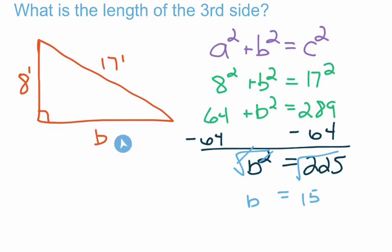So the missing side of the triangle measures 15 feet. Just a note: an apostrophe symbol represents feet and a quotation mark represents inches. You can also just write out the word feet. So the length of side B is 15 feet. Let's take a look at another problem where we can use the Pythagorean Theorem.